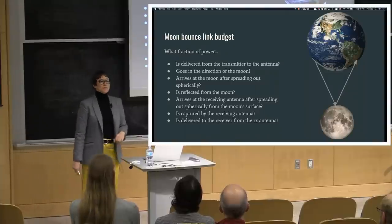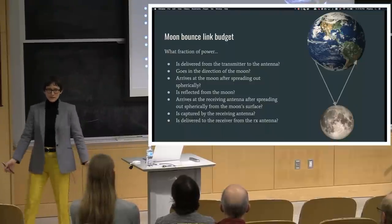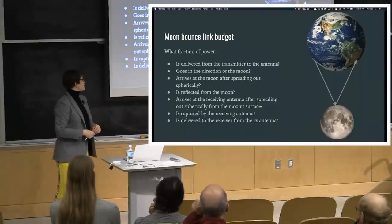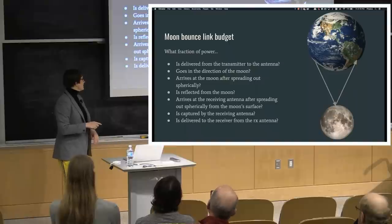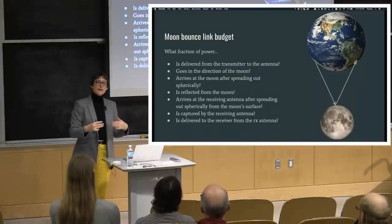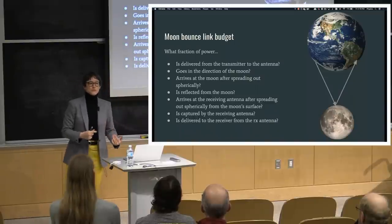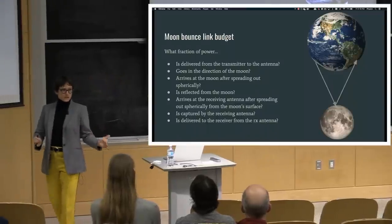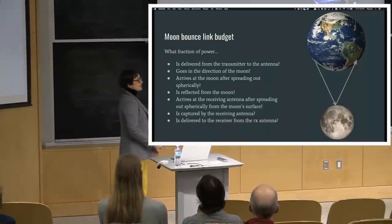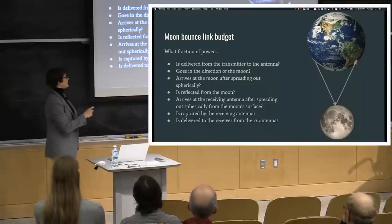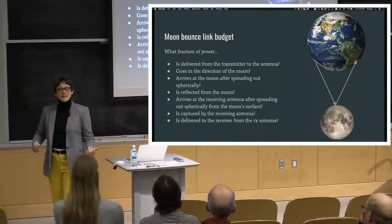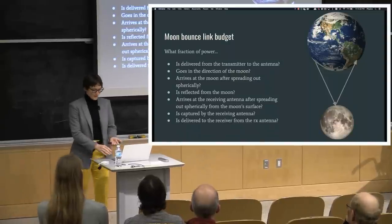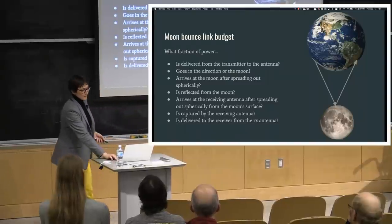What proportion of the reflected power arrives back at the receiving antenna after spreading out spherically from the moon? What proportion is captured by the receiving antenna—it has to be pointed in the right direction? What proportion of that collected power is actually delivered to the receiver? Our antenna system has circuit aspects—transmission lines, matching, impedance—radio wave propagation aspects with free-space path loss, and radar cross-section aspects. What exactly is the RCS of the moon and how reflective is it? Luckily, large spheres are pretty well understood.